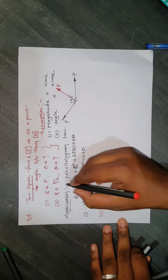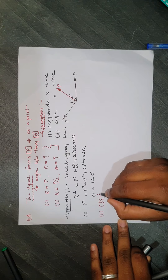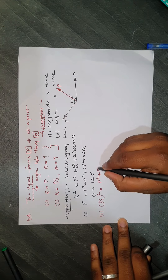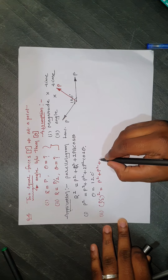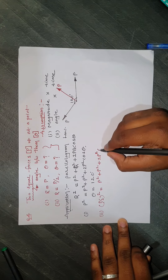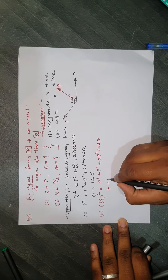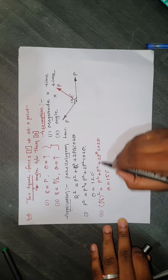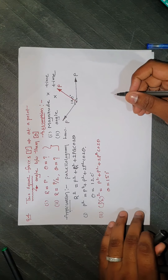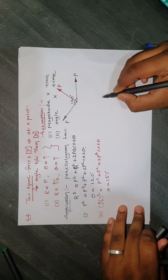For the second condition, the resultant is P/2. Substituting: (P/2)² = P² + P² + 2P²cosθ. Solving this equation gives theta = 151 degrees.